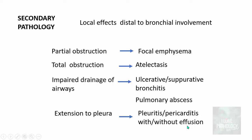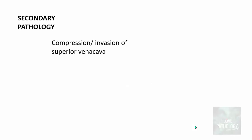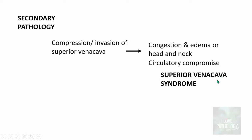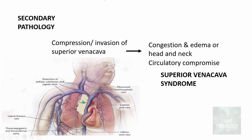Pleuritis and pericarditis can occur with or without effusion — meaning collection of fluid in the pleural or pericardial cavity. Pleural effusion is more common. The tumor can also directly compress or invade the superior vena cava, resulting in congestion and edema of the head and neck — this is called superior vena cava syndrome. It causes distension of the axillary, subclavian, and jugular veins, leading to severe edema of the head and neck region.